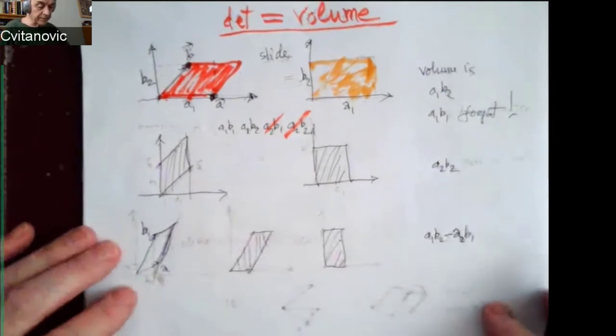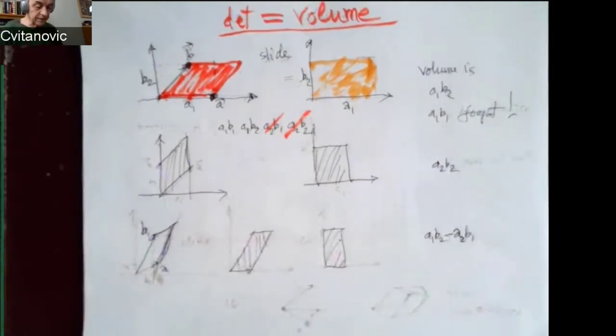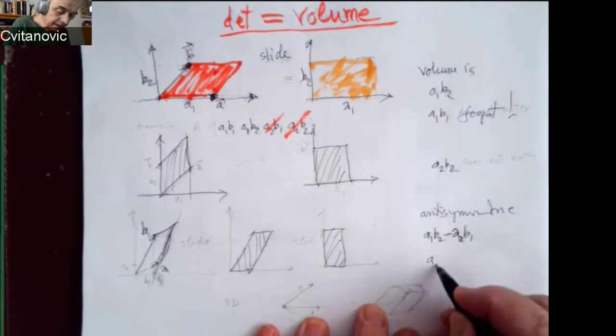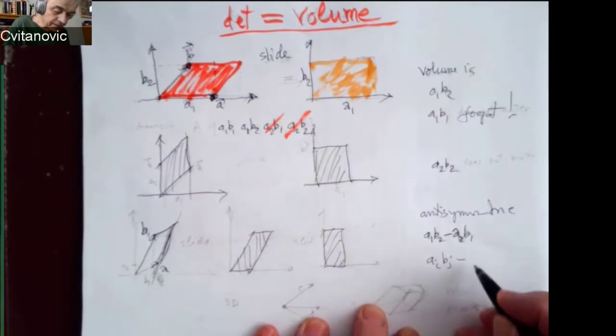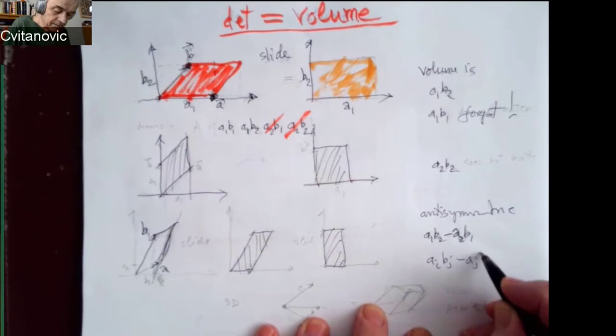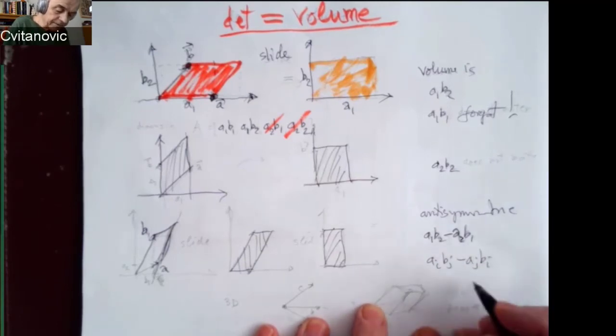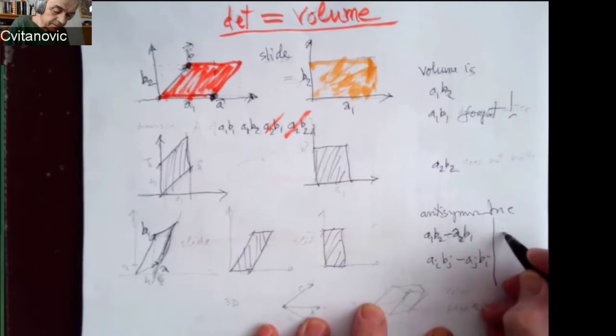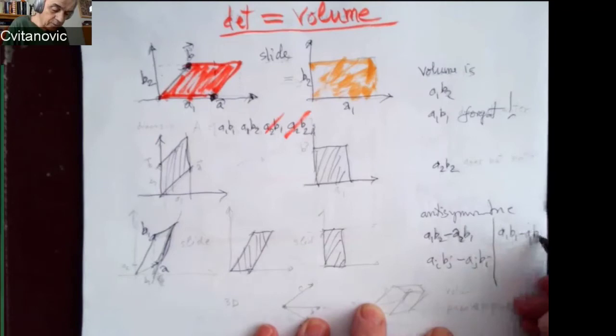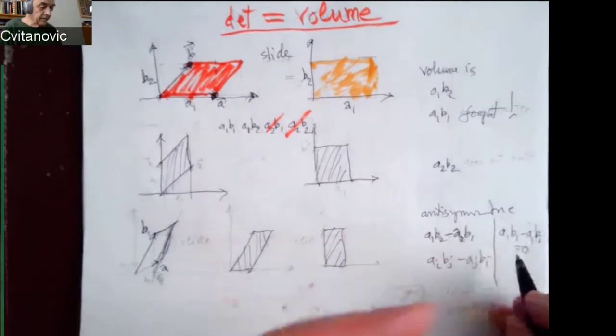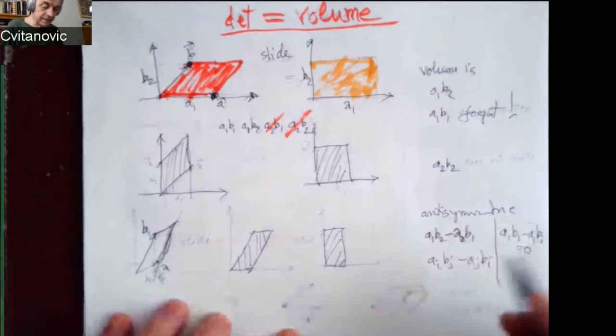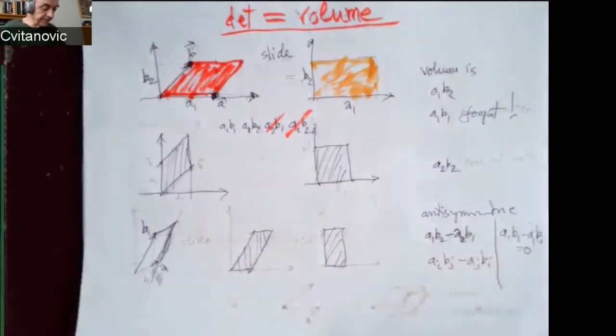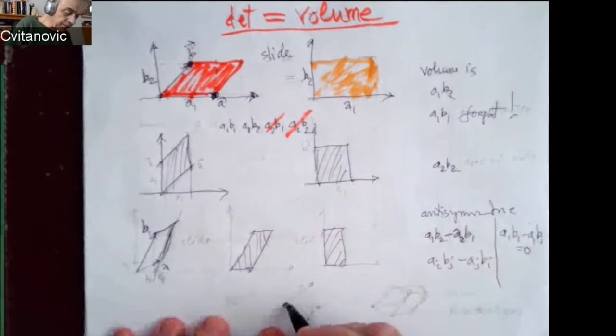As a property that if I look at A1, B1 minus A1 interchanging the two indices, I get zero. So, everything that's pointing in the same direction goes out, and you need an anti-symmetric combination. This now goes in all dimensions.